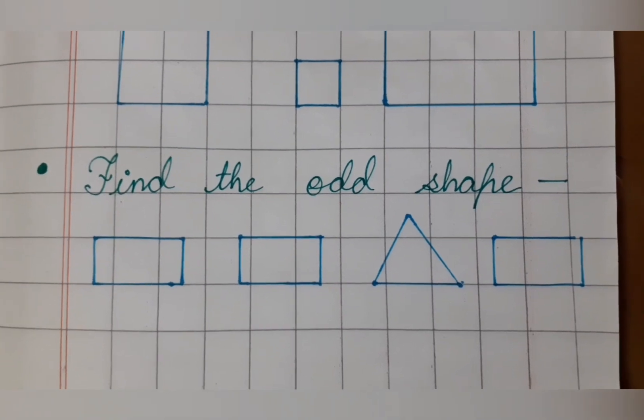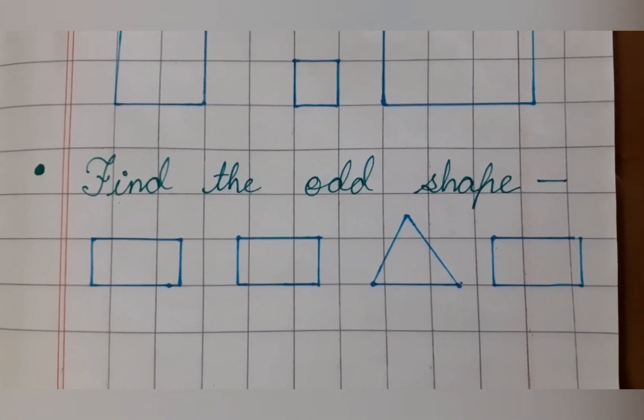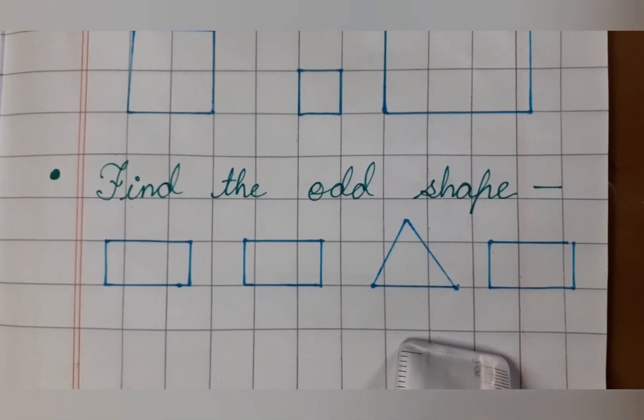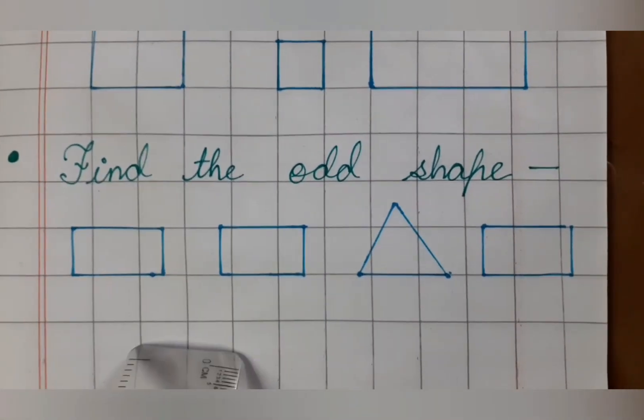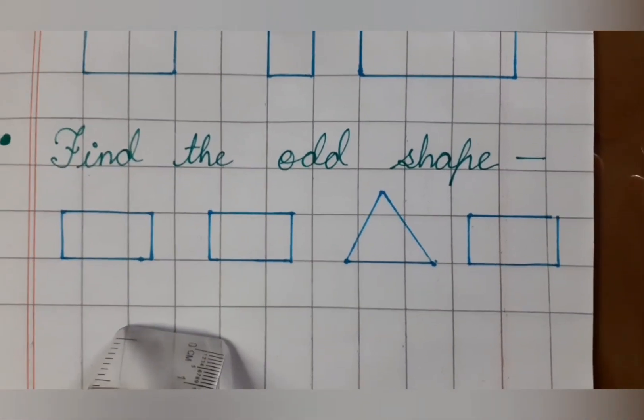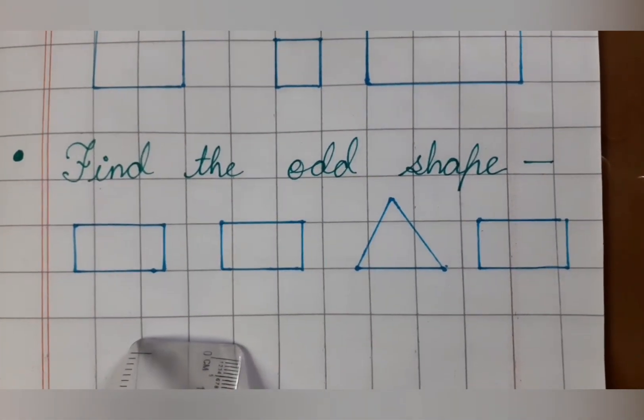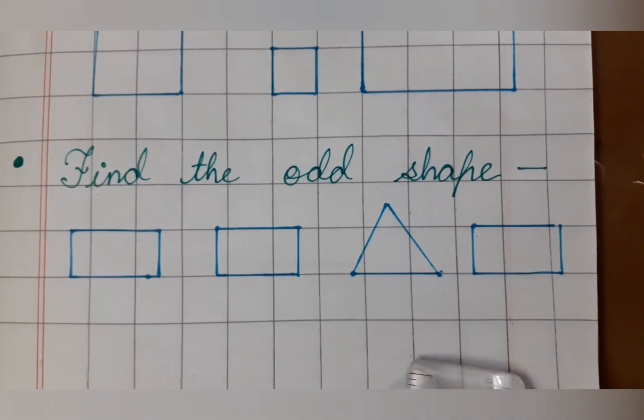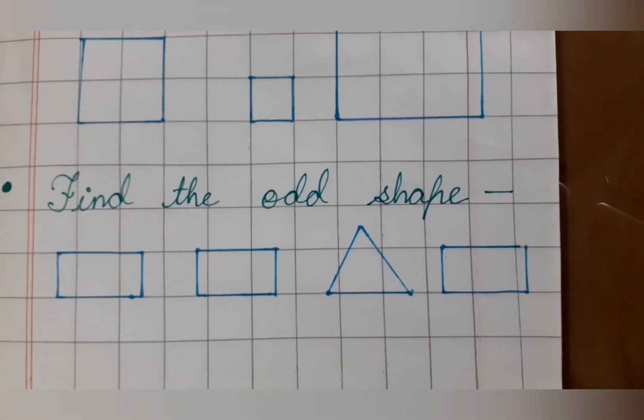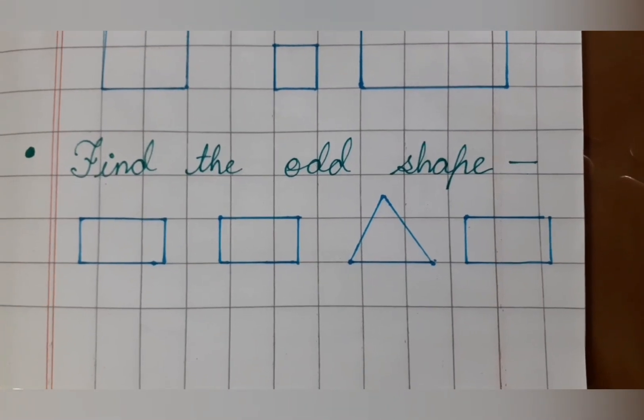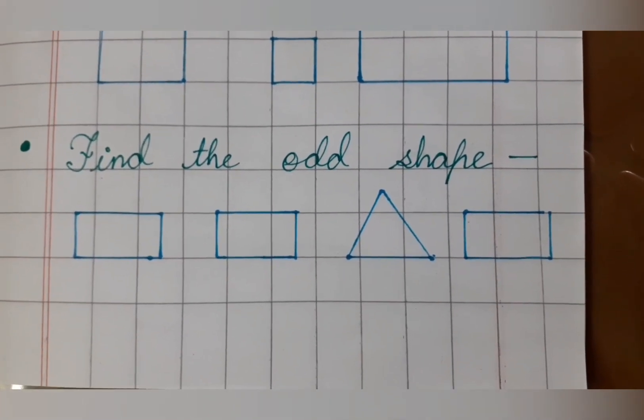So, what is done in find the odd shape? Can you tell me? So, basically, you can see we have four shapes here. Among them, three are of same type. Three of them are same. And one is different. There are some rectangles and triangles. So, you will find which one is other, which one is different from rest of it. That one you will color.